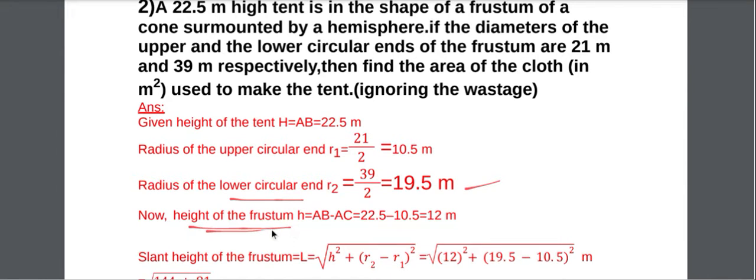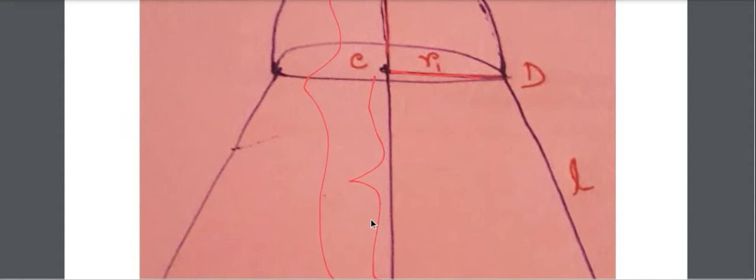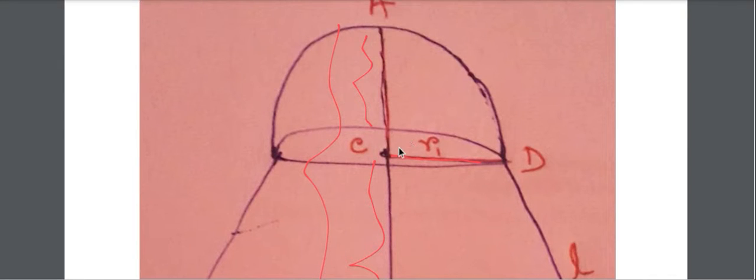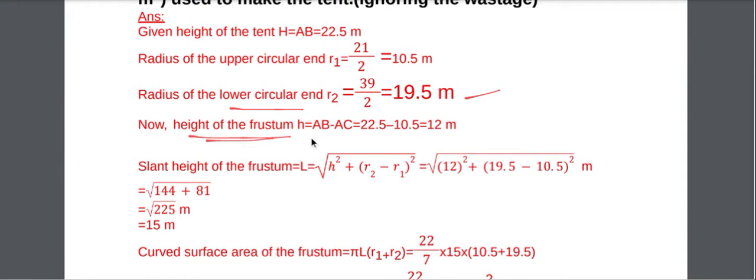Height of the frustum BC = AB − AC. From the figure, AC equals R1, as both AC and CD are radii of the hemisphere. So BC = 22.5 − 10.5 = 12 meter.